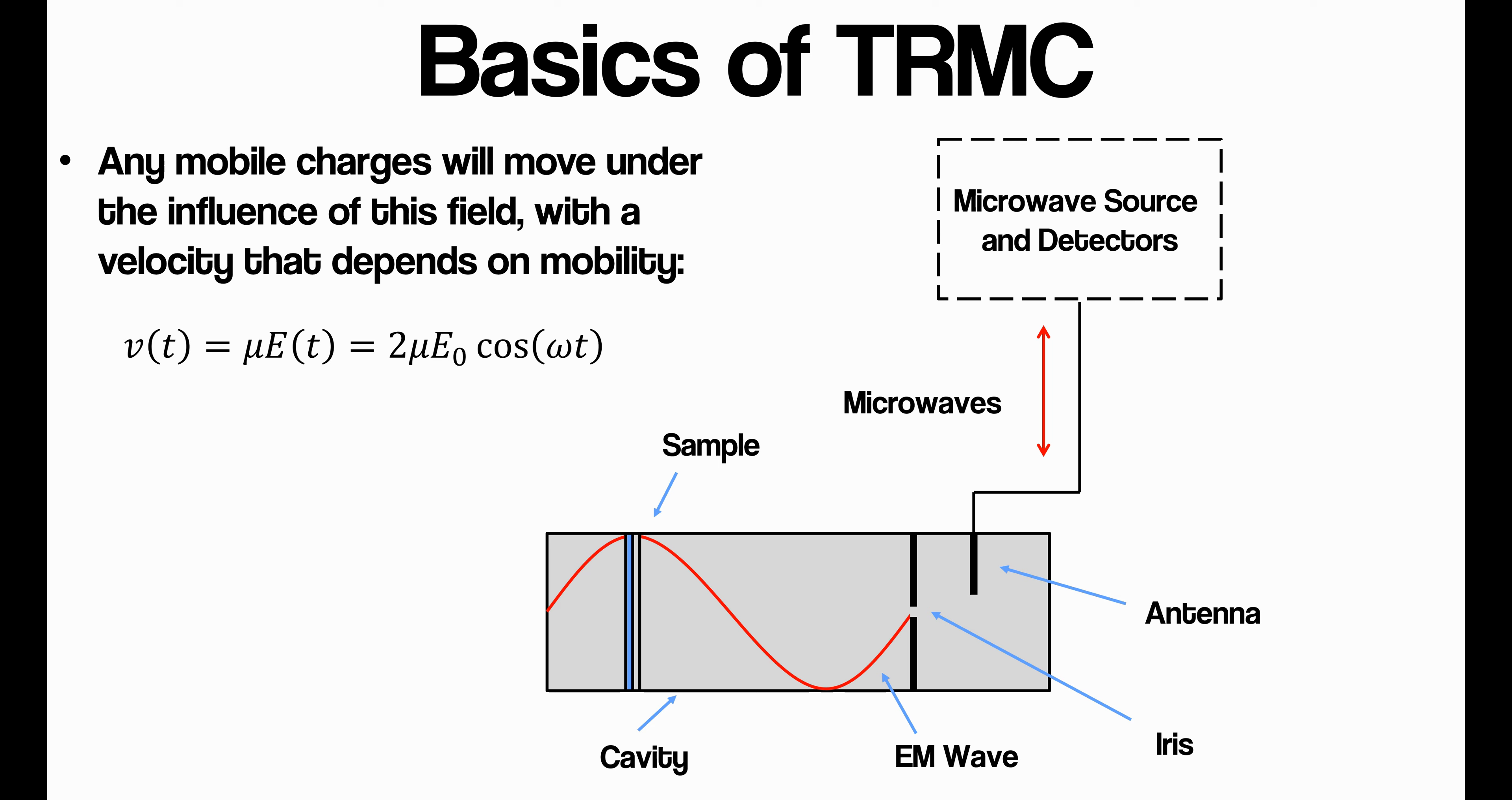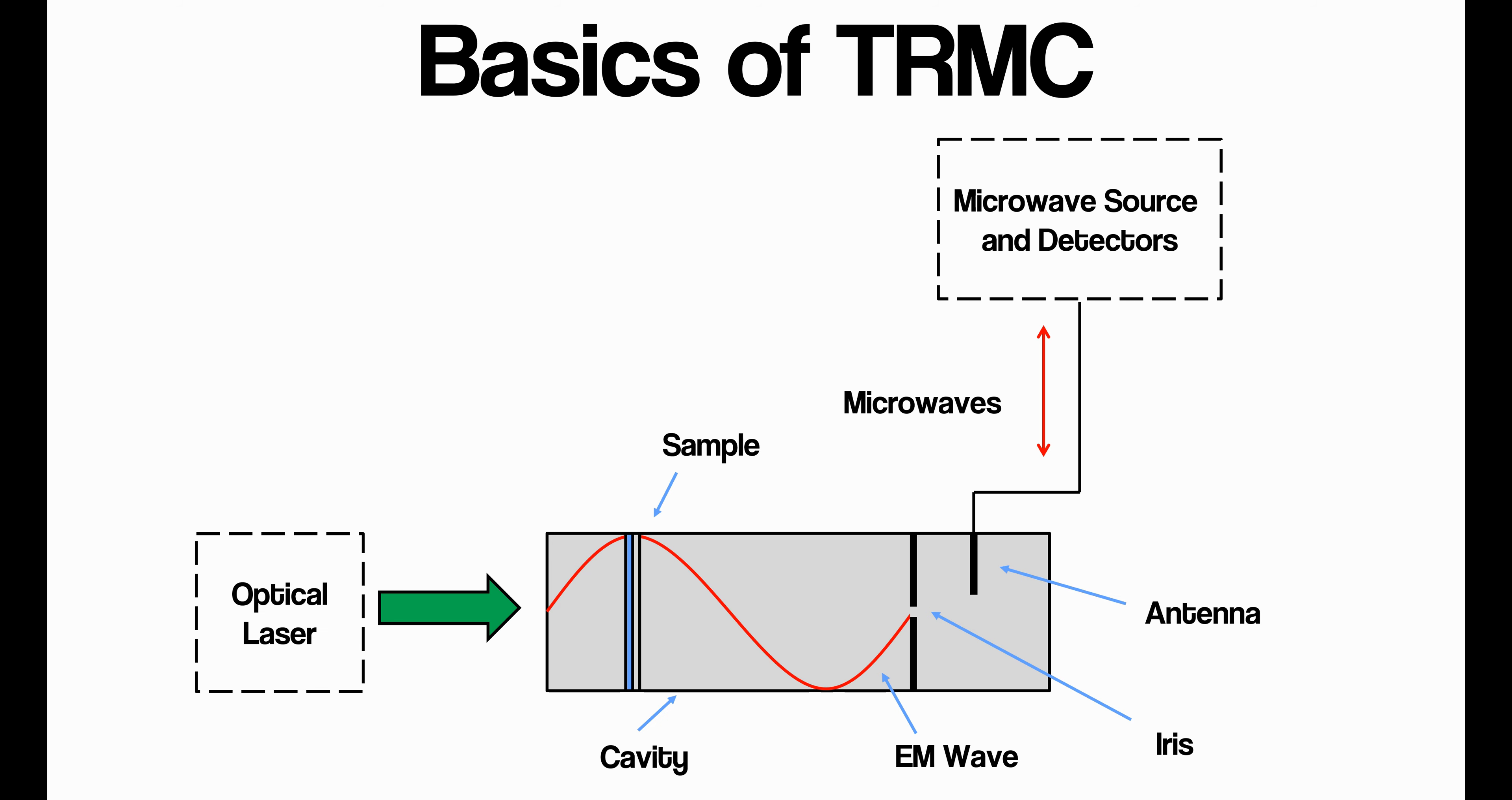And what this means is that any charge carriers which are in the sample will be absorbing energy from the electric field, and hence the reflected microwaves back to the detection circuit will be slightly changed when there are carriers in the sample. So what we do, we take our sample, which should have a reasonably low concentration of electrons and holes in the dark, we illuminate it, create these electrons and holes, they move under the influence of this standing electric field, and then the microwaves that are reflected back to the detection circuit are changed.